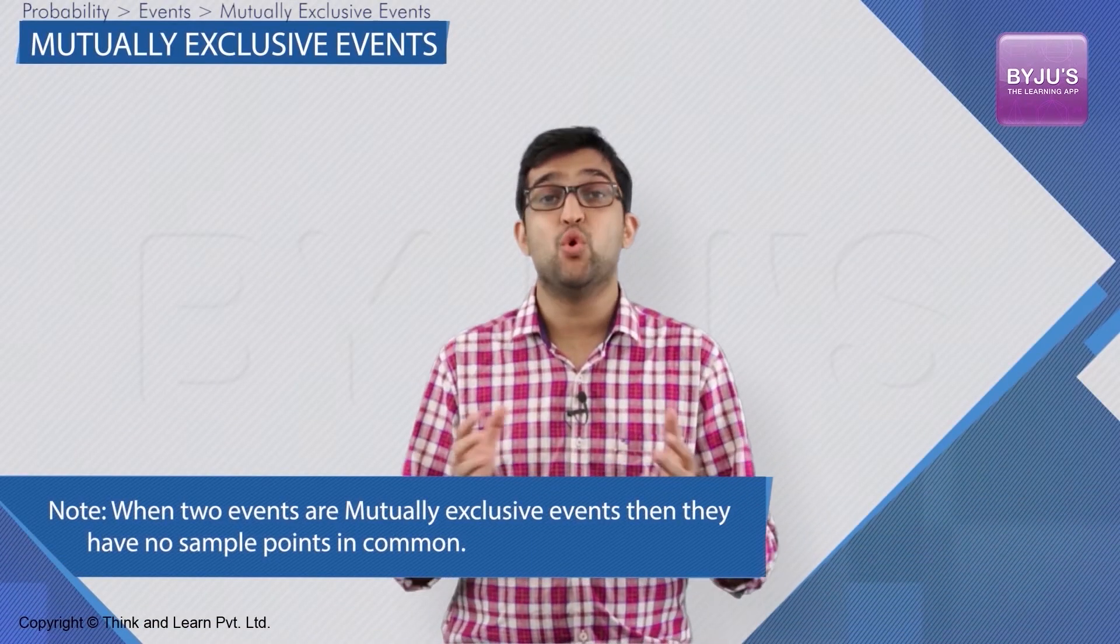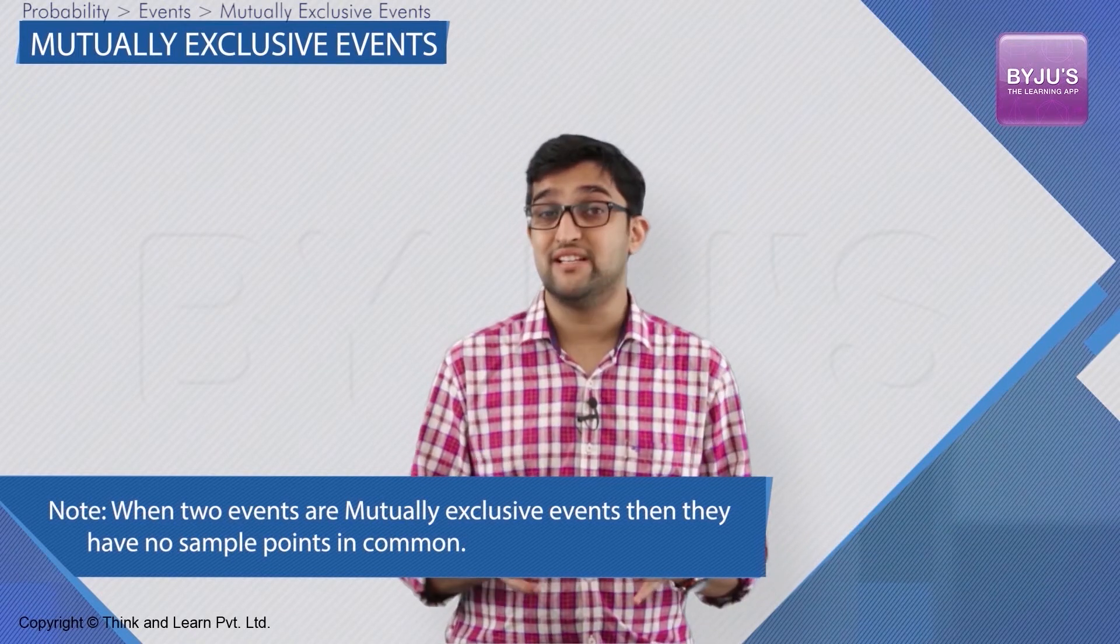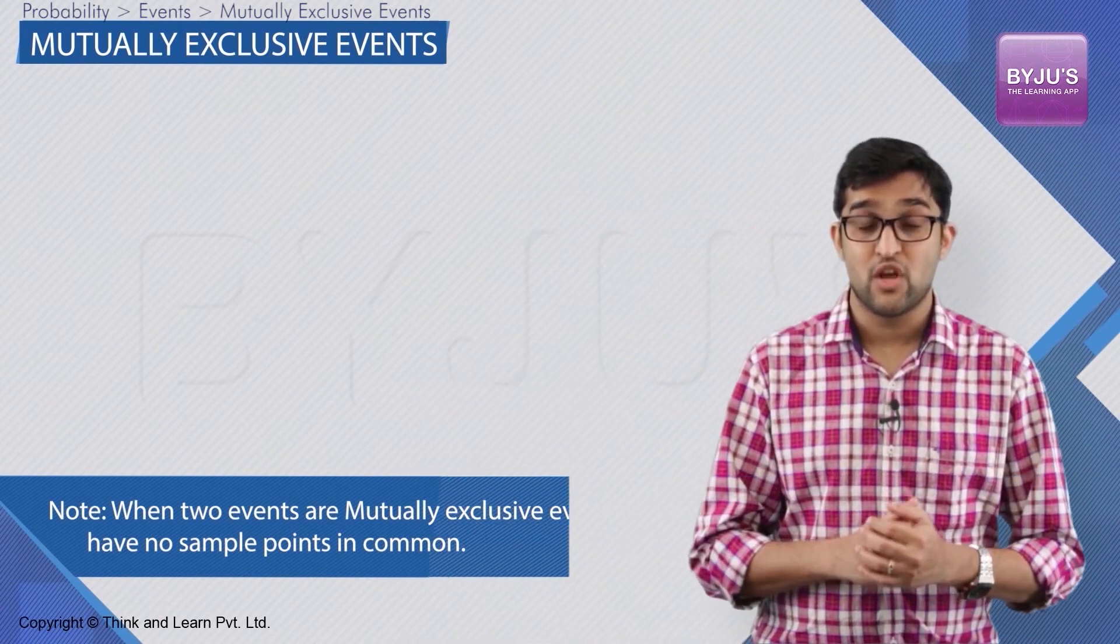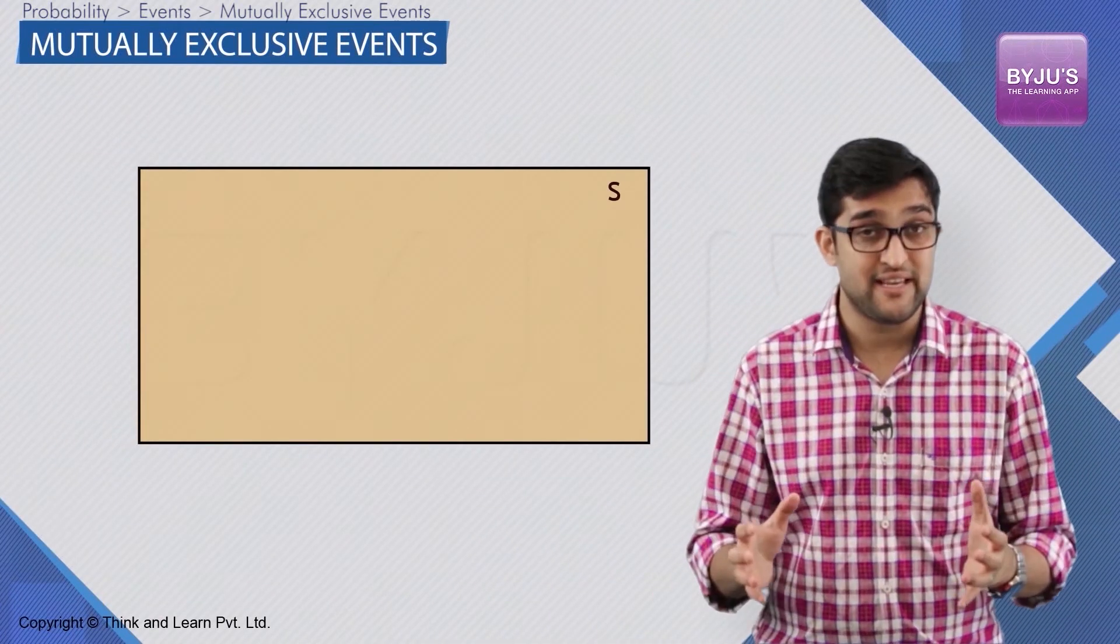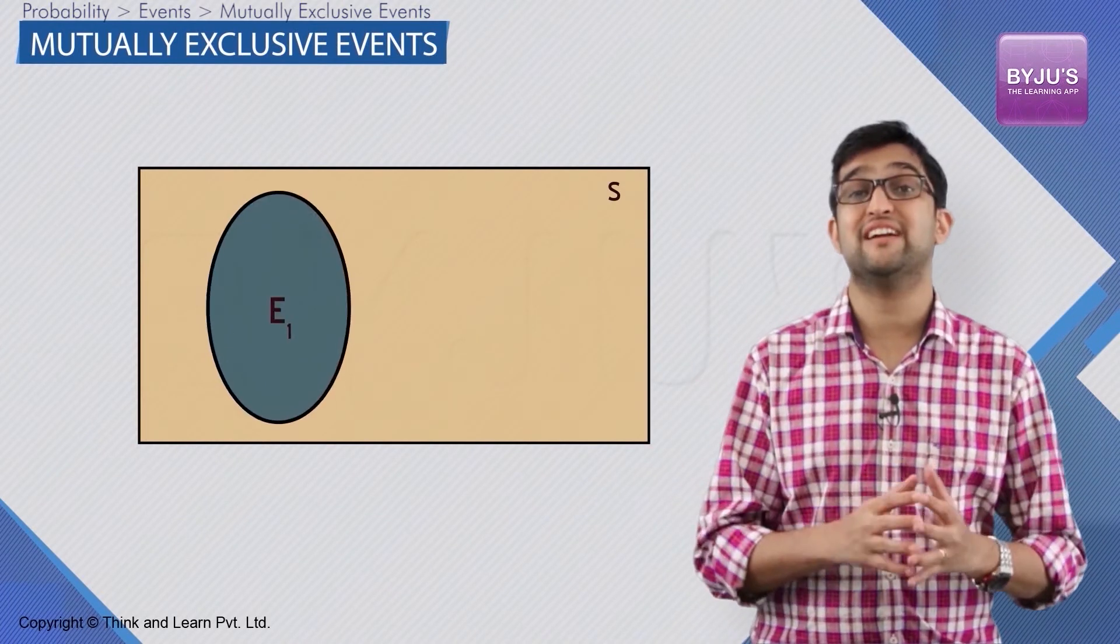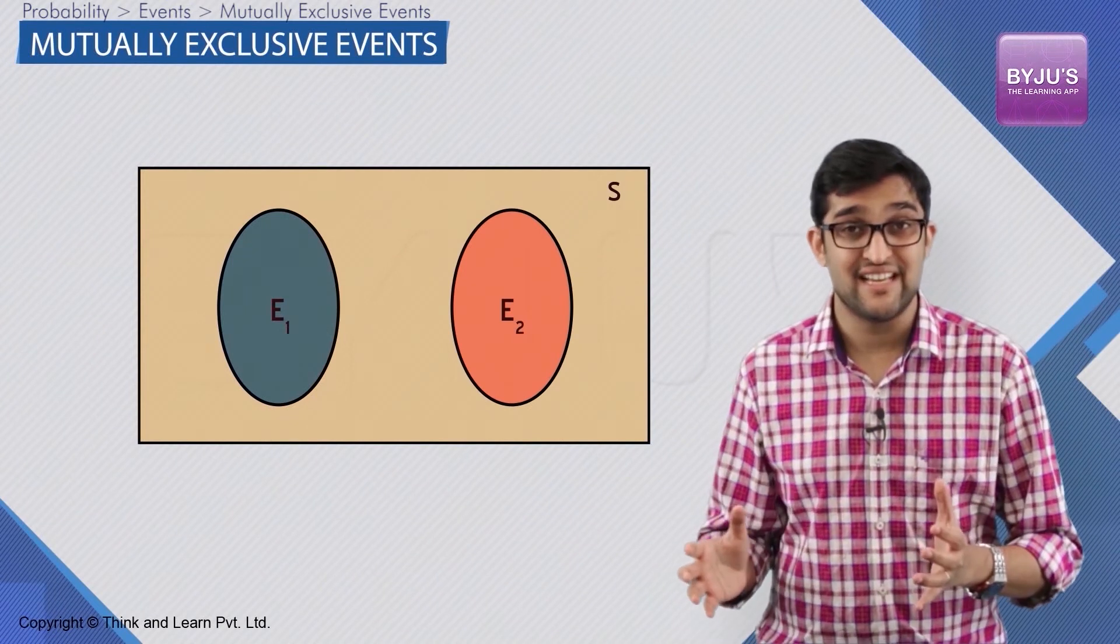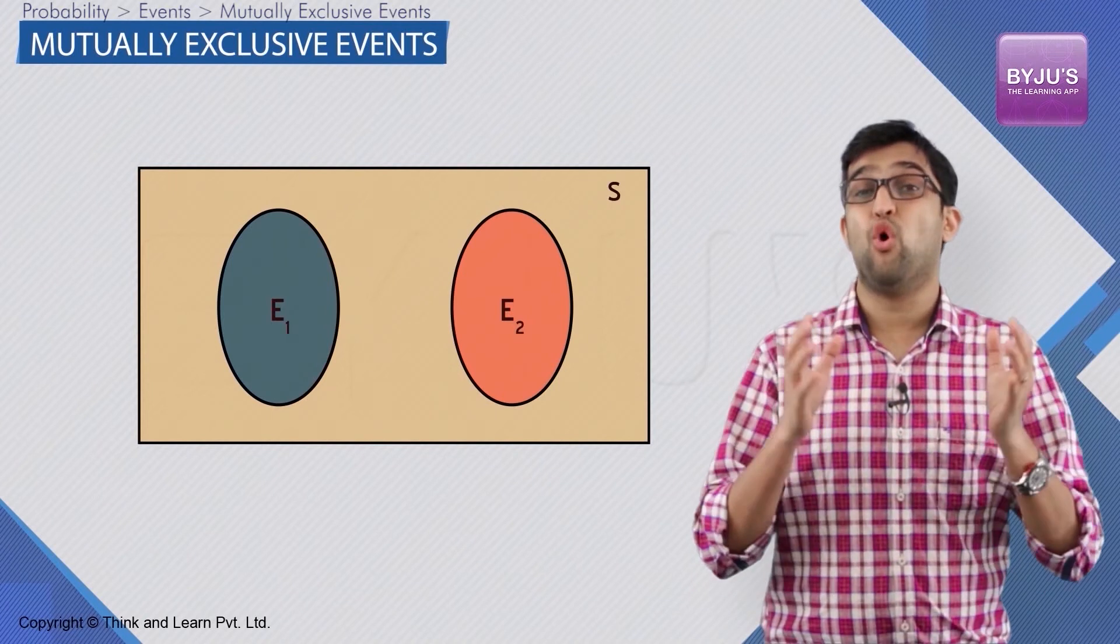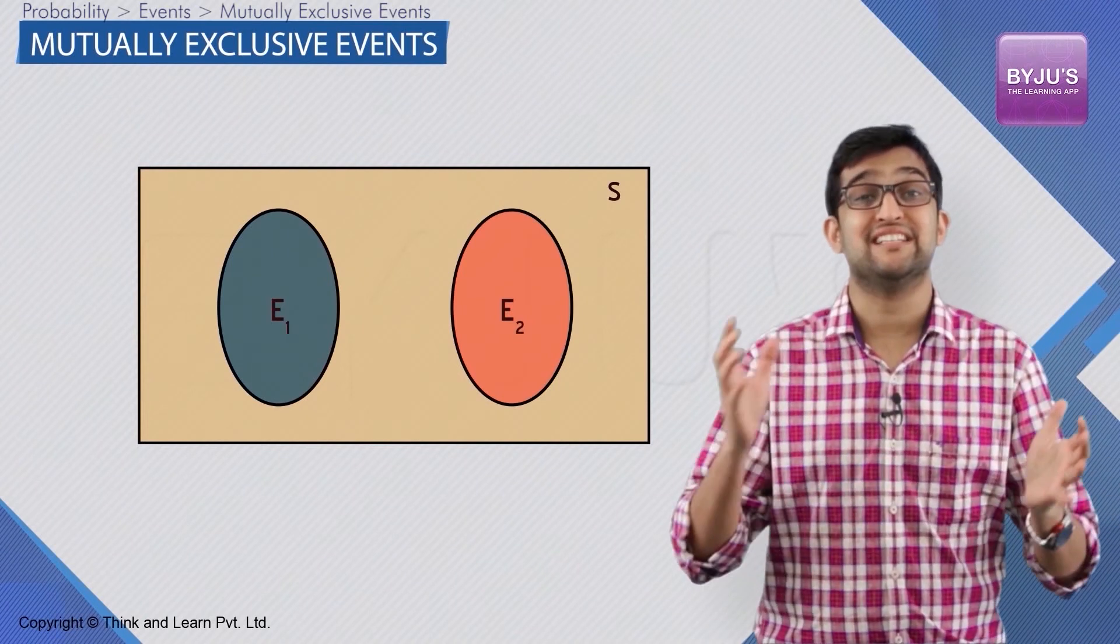An important point to note is that when two events are mutually exclusive events, then they have no sample points in common. So, if S is the sample space which is the universal set of all outcomes, and E1 and E2 are mutually exclusive events, then as you can see in the Venn diagram in front of you, there will be no overlapping between E1 and E2.